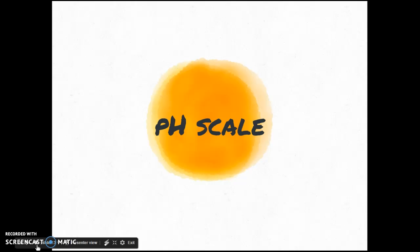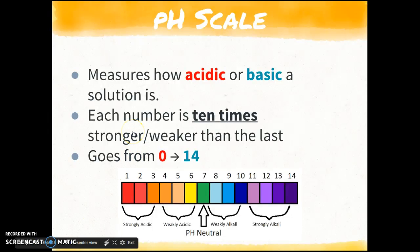So let's talk about the pH scale. We said that acids have a low pH, bases are going to have a high pH, and it basically measures how acidic or basic a solution is. It's going to go from 0 to 14. I know that this picture doesn't show the 0, and that's because there's not many acids that go down that far. And each number is 10 times stronger or weaker than the last. So if you go from 7 to 8, 8 is 10 times more basic than 7. 9 is 100 times more basic than 7. So it goes by powers of 10.